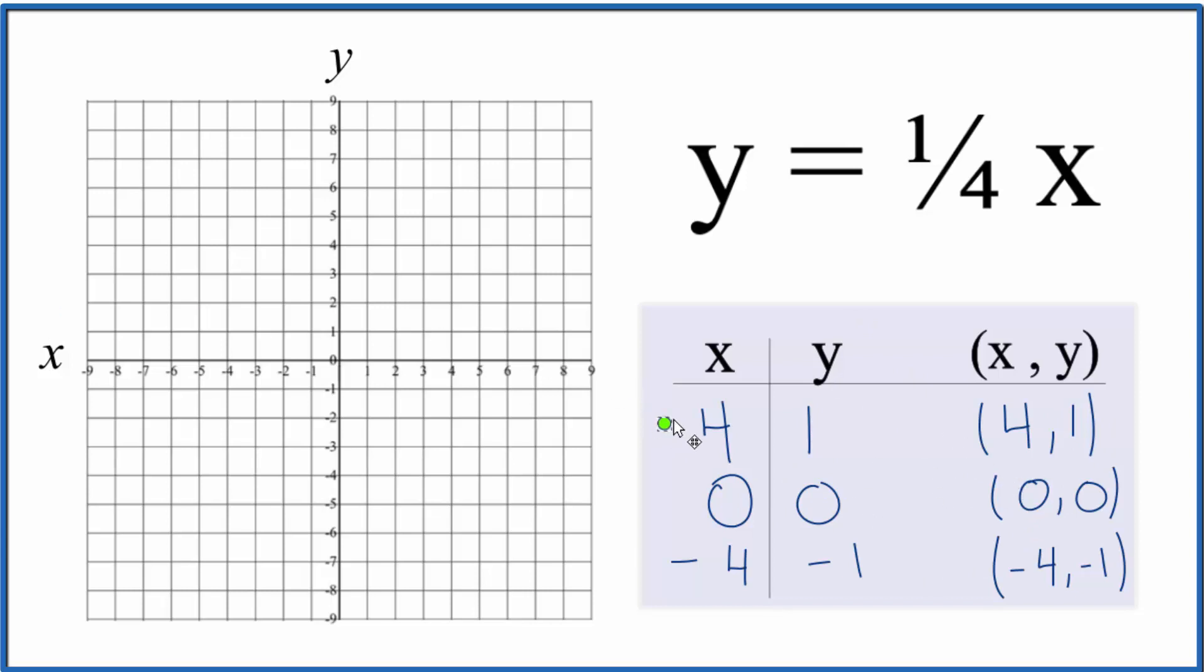So let's start out by going to x is four, one, two, three, four, and y is one. Then we have x is zero and y is zero. So here's x is zero and y is zero.